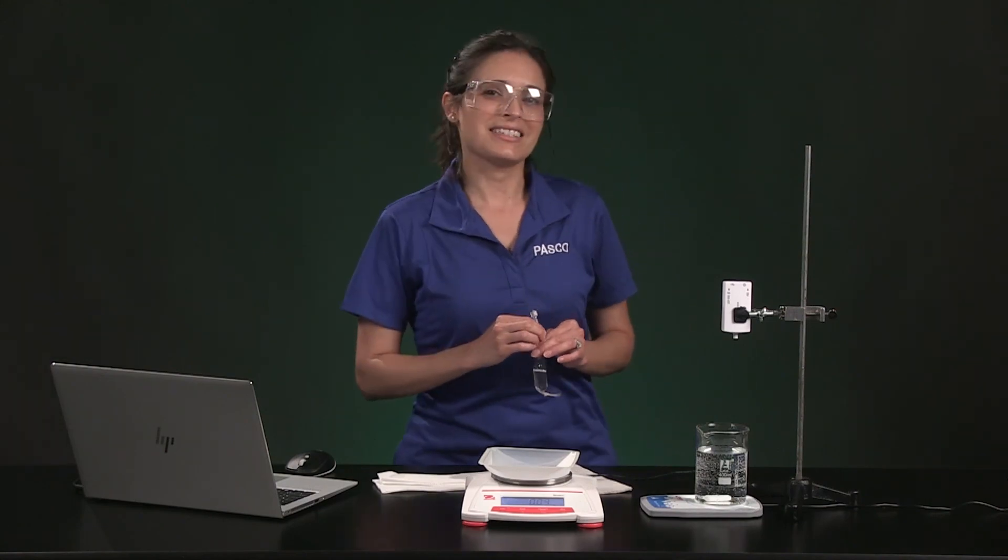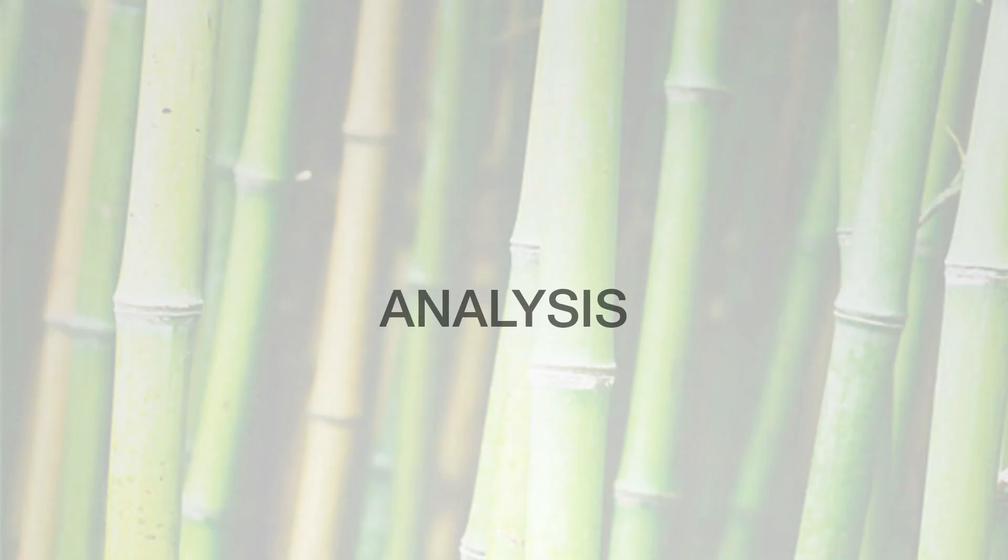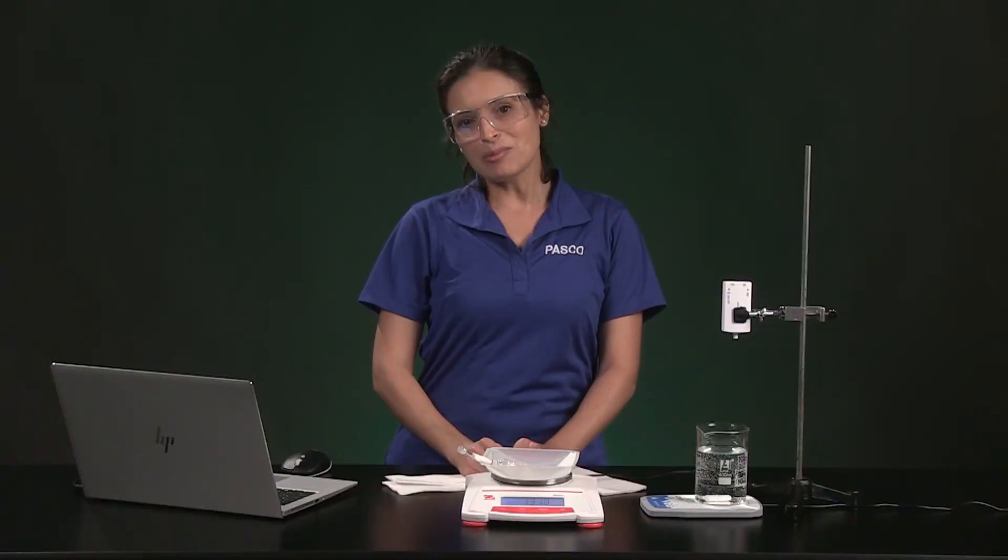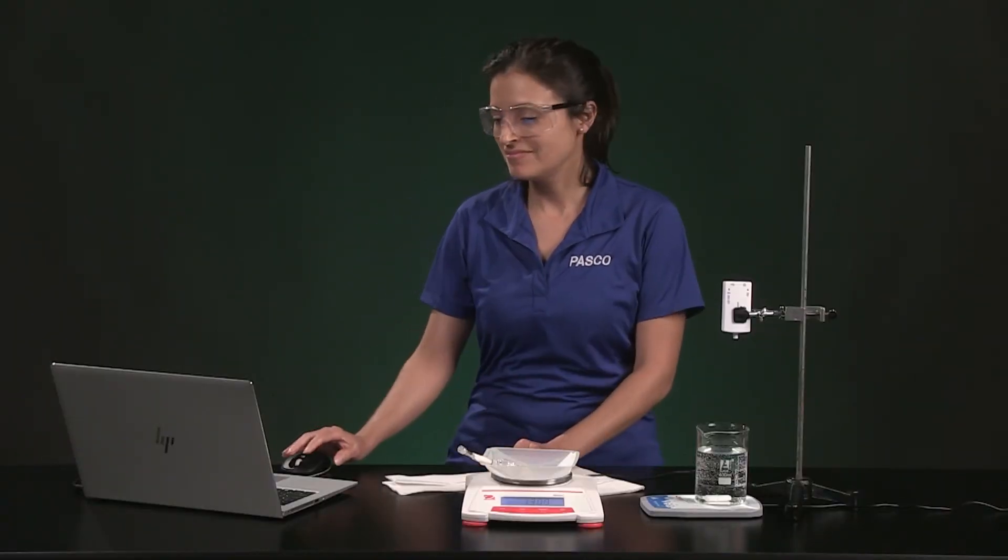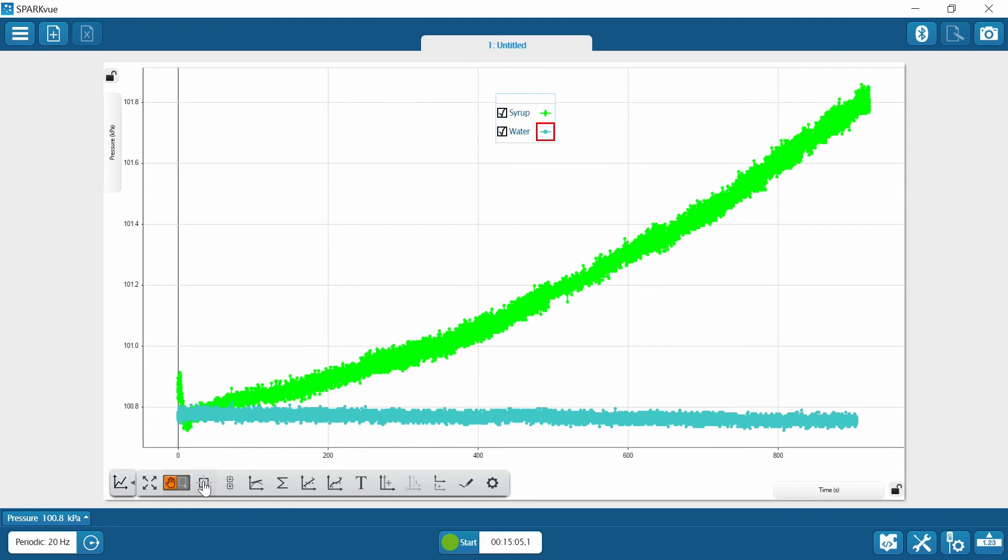Let's move on to analysis. In table one you will need to record initial and final pressure for each run. Use the coordinate tool in Spark View to help you get these values from the data. These are XY coordinates. So the first value is time and the second value is pressure in kilopascals. I can click and drag the gray box to move it to initial and final data points on each run.